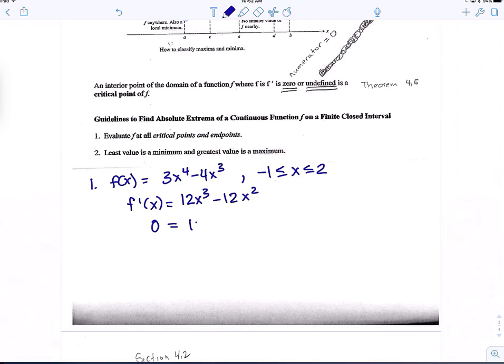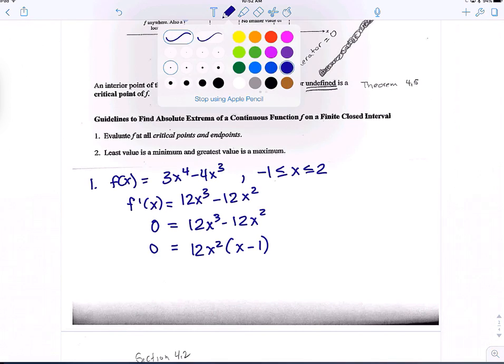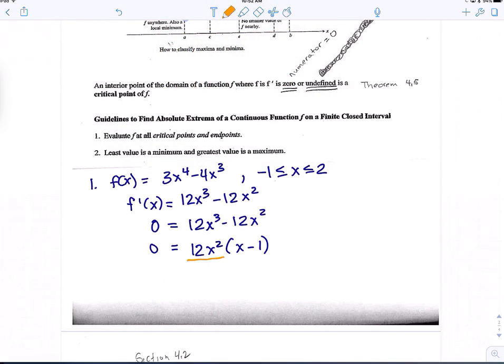So 0 is equal to our function. It's the derivative right there. Let's factor out a GCF. So what can we take out on the right? 12x squared. 12x squared, which would leave us with an x minus 1, right? Okay, so when we set each of these terms equal to 0, so I set this term equal to 0 and solve. And then I set this term equal to 0 and solve.